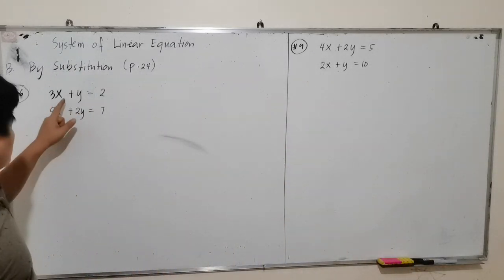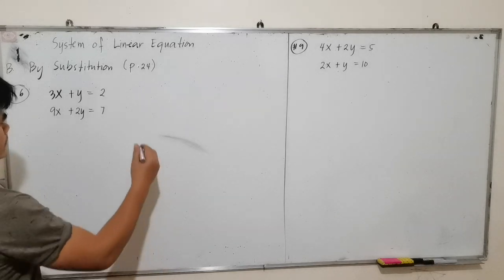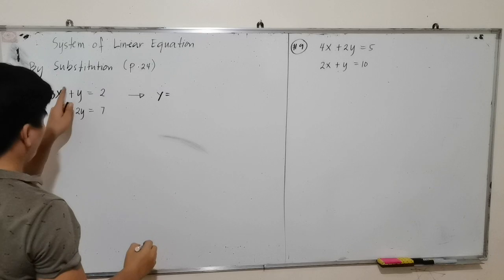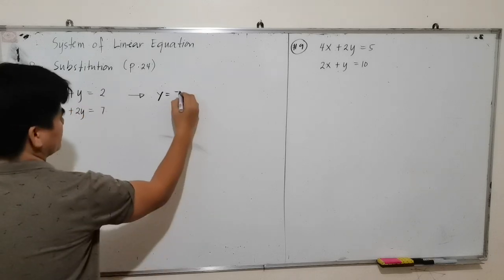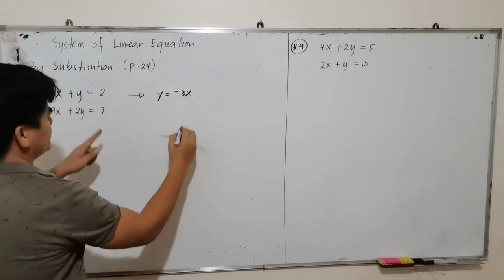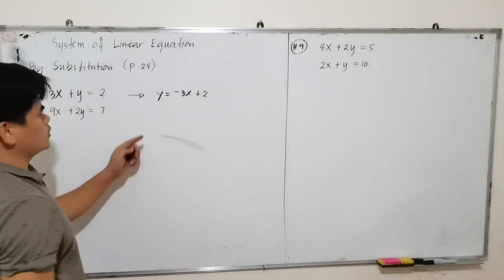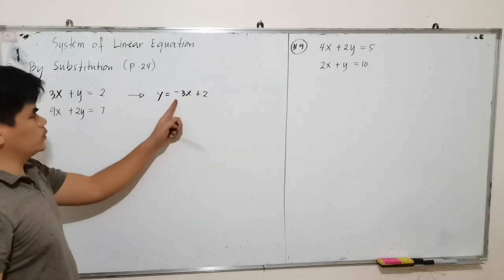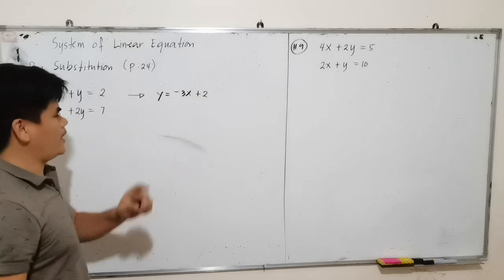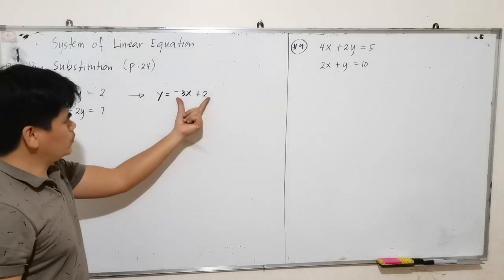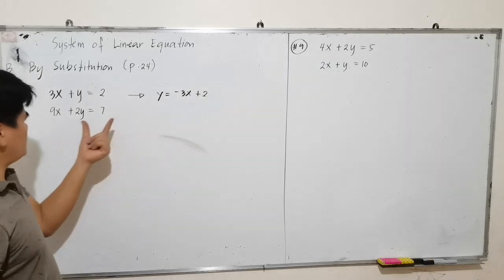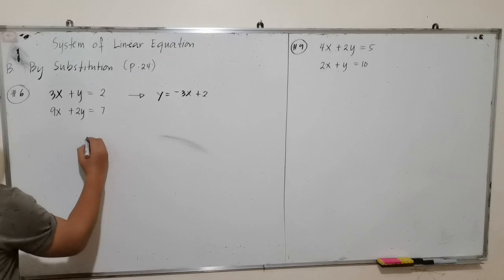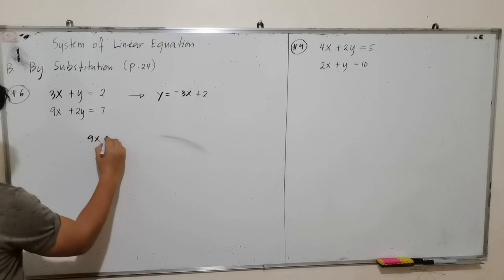In this example, 3x plus y is the easier equation. So we isolate y: y equals negative 3x plus 2, by transposing 3x to the right side. Now we have the value of y, which is negative 3x plus 2. We will substitute this value into the second equation.